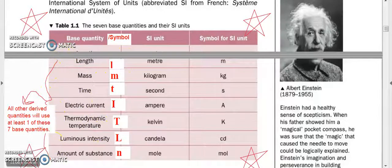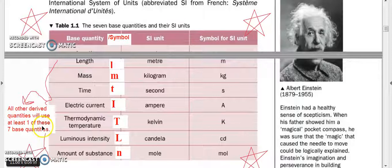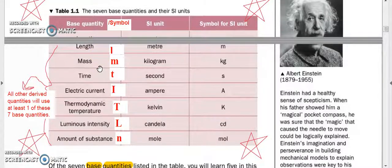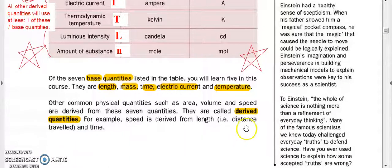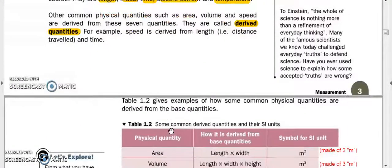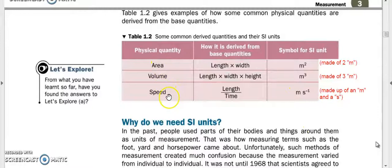Out of these seven base quantities, we can derive all other derived quantities using at least one of these seven base units. For example, speed uses length and time: meters per second. Area uses length times length. The derived qualities are all derived from the seven bases, either all or just a couple of them. These are some more examples of derived units: area, volume, and speed.